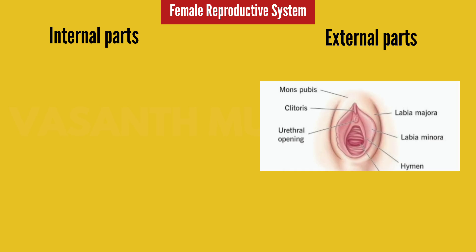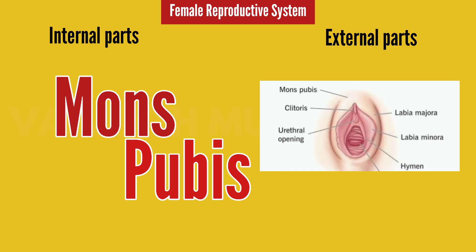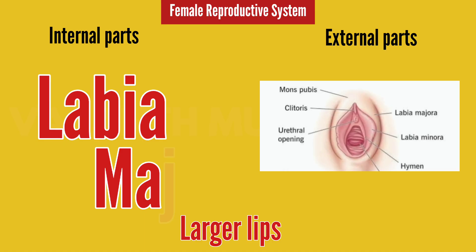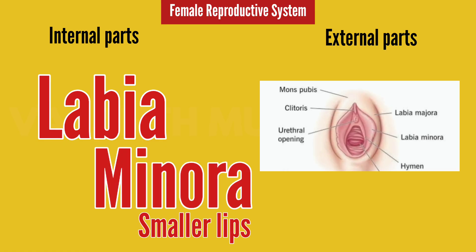Next are the external structures of the female reproductive system. The first part is the Mons Pubis, which is completely made of fat tissue. Next is the Labia Majora, also called the large lips — it is a larger structure. Labia Minora is the small lips, and it is flush tissue, so it appears very red. The Labia Majora is a bit thicker.